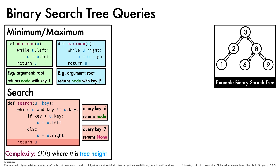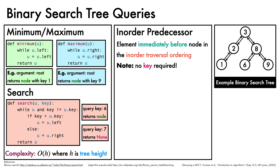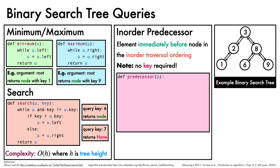The complexity of the minimum, maximum, and search operations is O(h), where h is the height of the tree. We'll now look at the operation of finding the in-order predecessor of a node. This is the element that appears immediately before the given node in the in-order traversal ordering. Note that no key comparisons are required to find the predecessor, since it relies only on the structure of the tree.